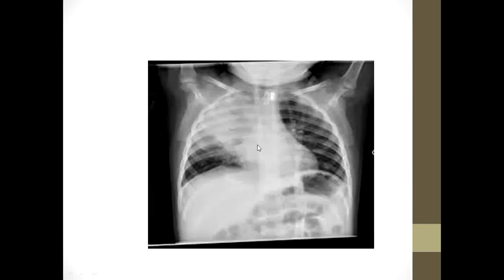This chest X-ray of a child shows the classical presentation of lobar pneumonia. The cardiac shadow is visible; the left lung field looks relatively clear. On the right side, there is a white opacity in the upper zone involving the whole upper lobe of the right lung. On closer inspection, there are homogeneous opacities with air bronchograms visible as dark areas, and the border of the heart is obscured — this is called the silhouette sign. These are all the radiological findings of consolidation or pneumonia.